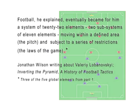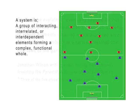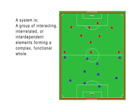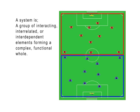In this video, we'll look at soccer systems and begin with Valerie Lobonofsky's perspective. First, the game is comprised of a system of 22 elements — the players. This system can be divided into two subsystems of 11 elements each — the teams.